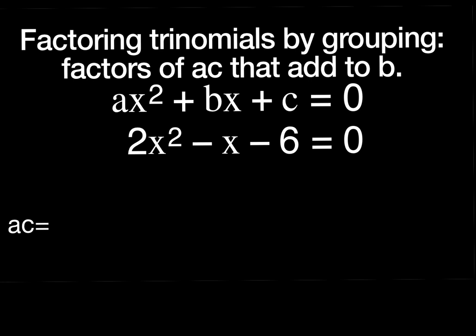Factoring trinomials by grouping — we're going to do slightly more challenging questions than what we've done the last couple of times. Here's the process and steps we'll go through. The standard form ax squared plus bx plus c is the standard form for a quadratic, meaning x squared is the highest power. Written in descending order with highest power first, then x, then no x's — that's a quadratic in descending order.